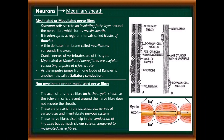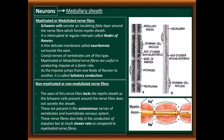Non-myelinated nerve fibers: the axon of these nerve fibers lacks the myelin sheath, as the Schwann cells present around the nerve fibers do not secrete the sheath. These are present in autonomic nerves of vertebrates and in invertebrates' nervous systems. These nerve fibers also help in the conduction of impulses but at a much slower rate compared to myelinated nerve fibers. That is all about the animal tissue — nervous tissue.